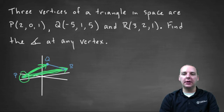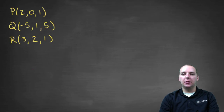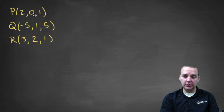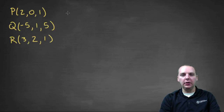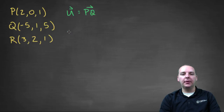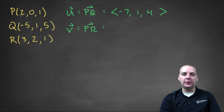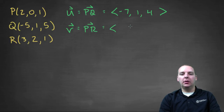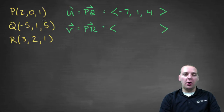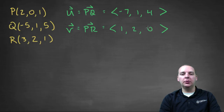We'll do terminal minus initial to create these two vectors. Let's call vector U the line segment P to Q, and vector V the line segment P to R. If we do terminal minus initial from P to Q, we get (-7, 1, 4) — that's negative five minus two is negative seven, then one minus zero, and five minus one. The vector from P to R will be (1, 2, 0).